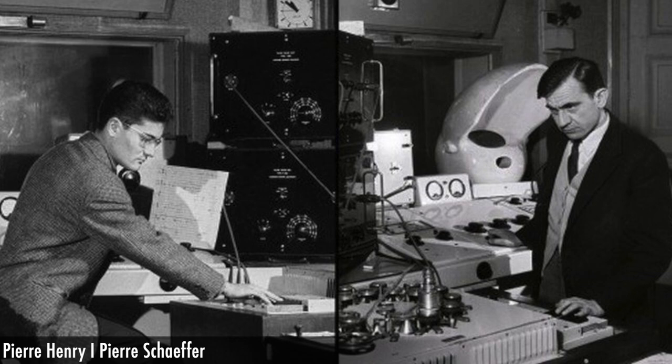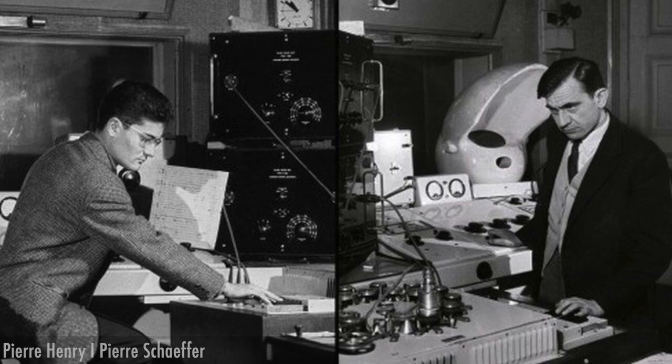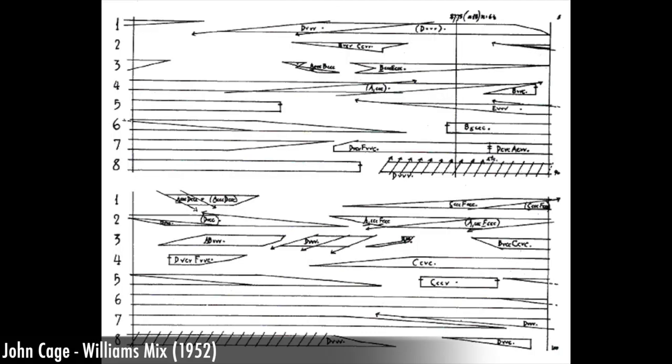Pierre Schaefer, in collaboration with Pierre Henry, introduced the space potentiometer. The device had four large hoops surrounding the performer, whose arm movements controlled the spatialization. In 1952, in his work Williams Mix, John Cage used eight mono tapes, each playing through its own speakers, distributed in space.